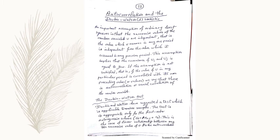We move to autocorrelation and the Durbin-Watson test statistic. An important assumption of the ordinary least squares is that the successive values of the random variable mu are independent, that is, the value which u assumes in any one period is independent from the value which is assumed in any previous period. This assumption implies that the covariance of ui and uj is equal to zero. If this assumption is not satisfied, that is, if the value of u in any particular period is correlated with its own preceding value or values,